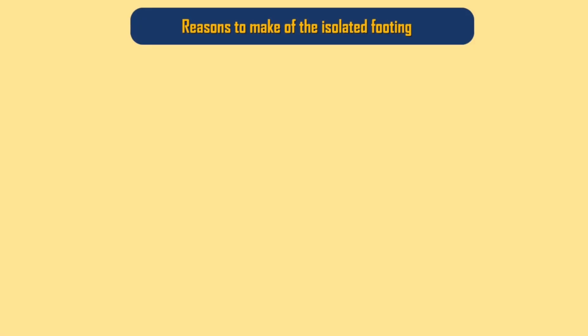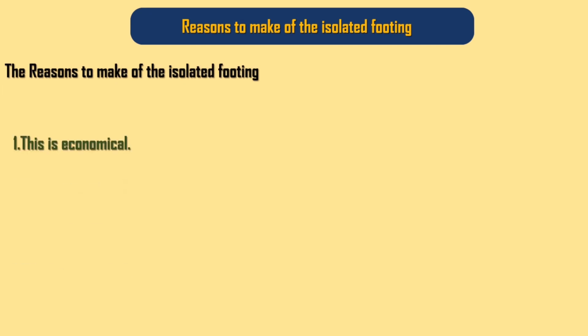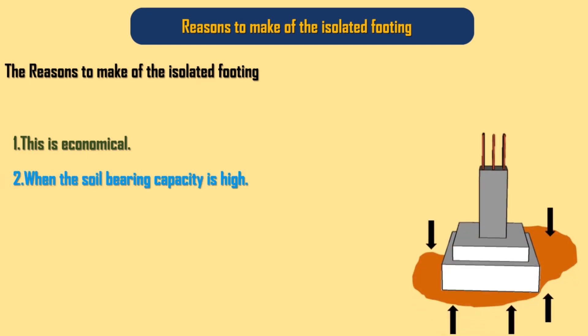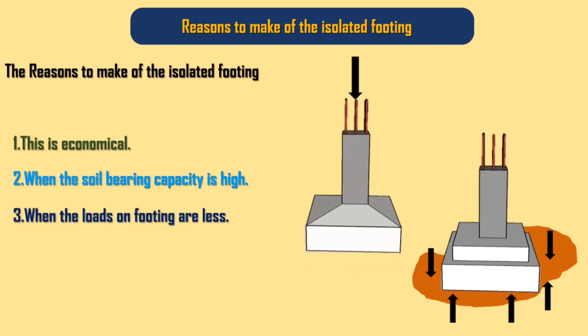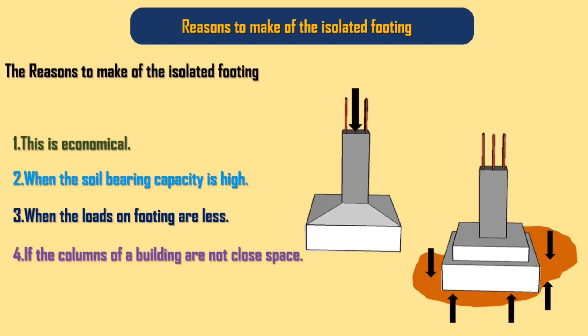Reasons to use isolated footing: 1. It is economical. 2. When the soil bearing capacity is high. 3. When the loads on footing are less. 4. If the columns of a building are not closely spaced.